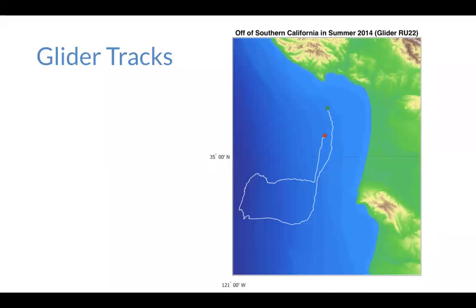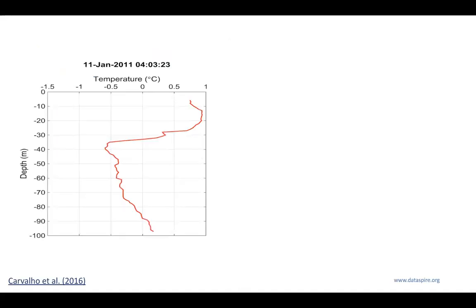Gliders go out on these tracks. Here's an example of a track that a glider took off of southern California during the summer of 2014. The green dot in the middle of the ocean is where the glider started; the white track line shows the GPS coordinates of where the glider went over the multiple days it was out; and the red dot shows where the glider was picked up. These gliders get deployed — released into the ocean — they dive around collecting data, sending it back, and then at predetermined times scientists go back and retrieve them.